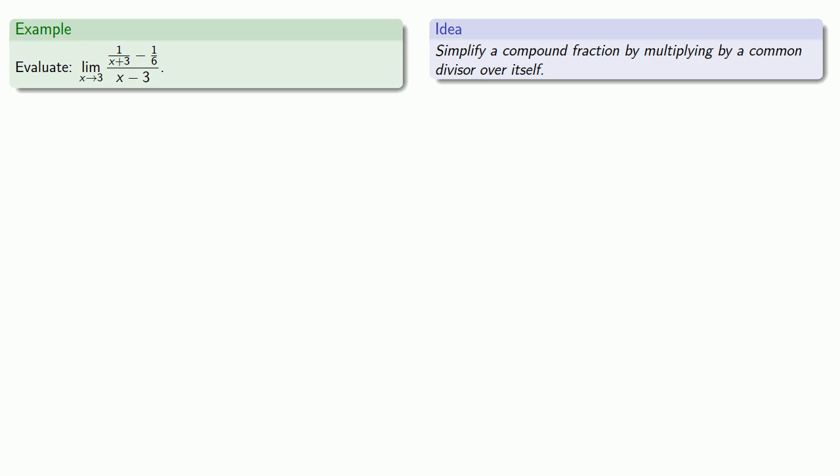In this case, the reason that we have a compound fraction is that we have a numerator where we have fractions with denominators x plus 3 and 6. And a common denominator of x plus 3 and 6 is going to be 6 times x plus 3. So if we multiply our fraction by 6 times x plus 3 over 6 times x plus 3, we'll get a simpler expression.